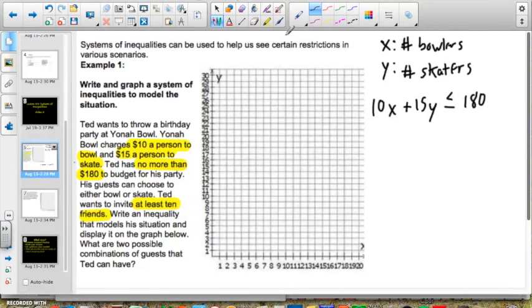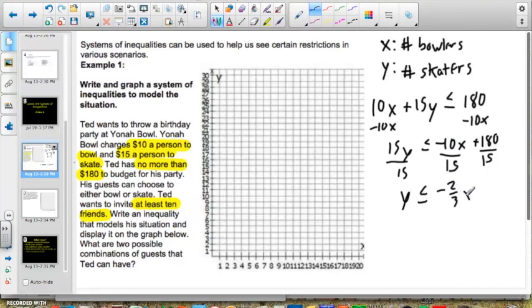Now before I can graph this I have to put it in slope intercept form. So I'm going to subtract 10x from both sides. I'm going to have 15y is less than or equal to negative 10x plus 180. I'm going to need to divide both sides by 15. Now I'm going to get that y is less than or equal to negative 10 over 15 reduces to negative two-thirds x and 180 divided by 15 is going to be 12.